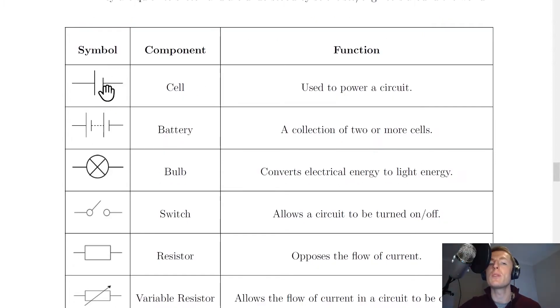So the first one we'll look at is what you would commonly call a battery, but this is not actually called a battery. So the thing with the positive and negative terminal, this is actually called a cell. And this is used to power a circuit.